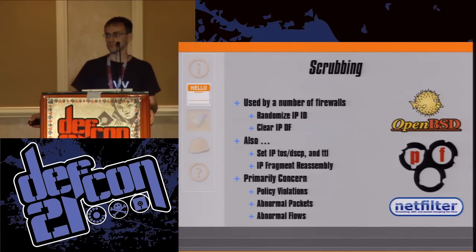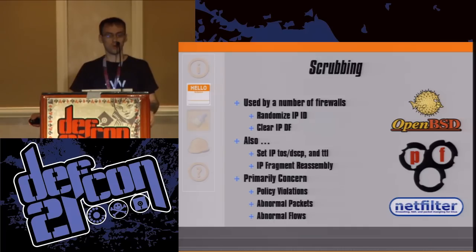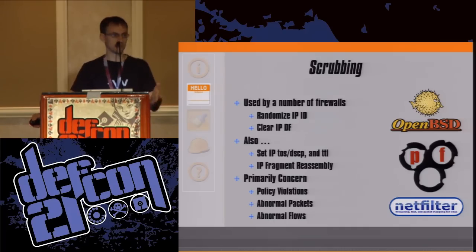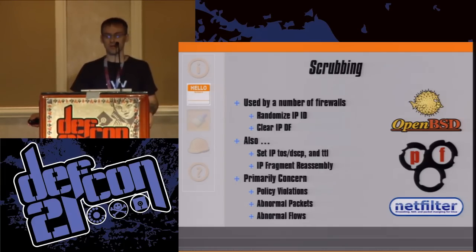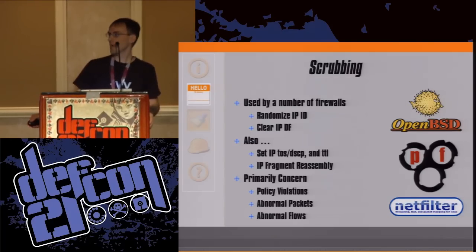We'll start with scrubbing. PF, PFsense, netfilter — all firewalls. They randomize the IP ID, or have the option to randomize the IP ID. Clear the IP do-not-fragment field. In addition, netfilter allows you to set the IP type of service and the TTL.